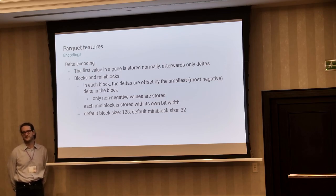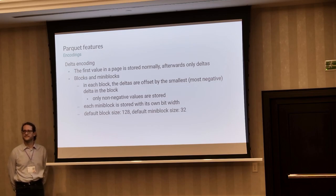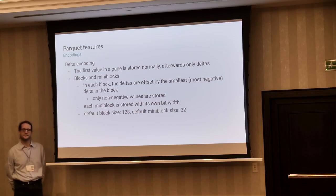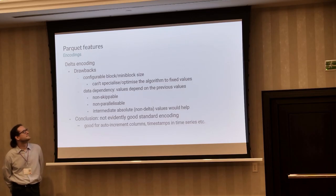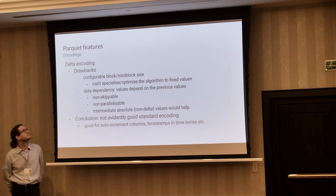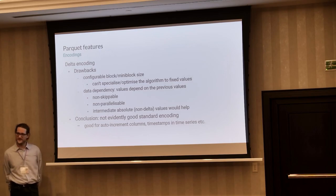These deltas are further divided into blocks and mini-blocks. In each block, deltas are offset by the most negative value — this ensures we don't have to deal with negative values. Each mini-block may have its own bit-width for bit-packing, which is a way to adapt to the nature of your data. We found some drawbacks connected to delta encoding. The first — which could actually be thought of as an advantage — is the configurability of block and mini-block sizes.